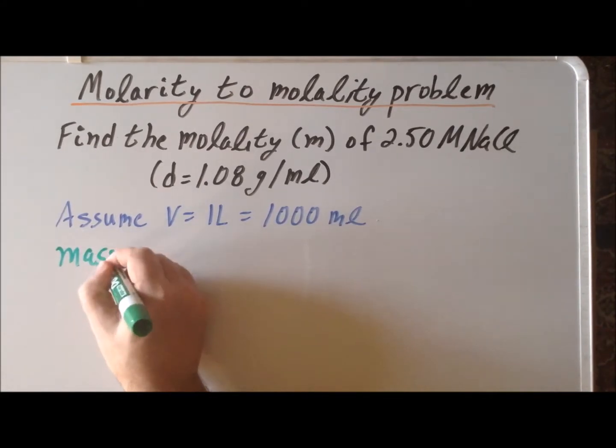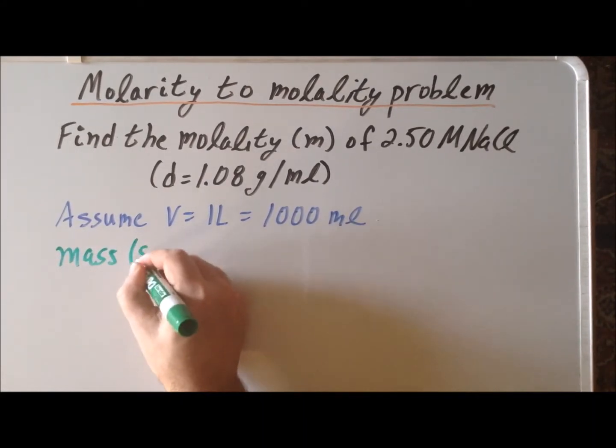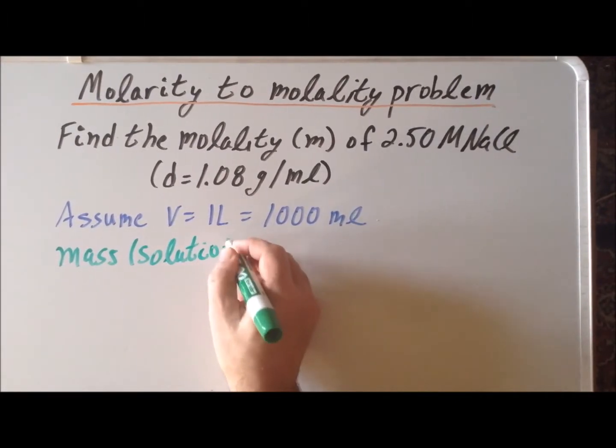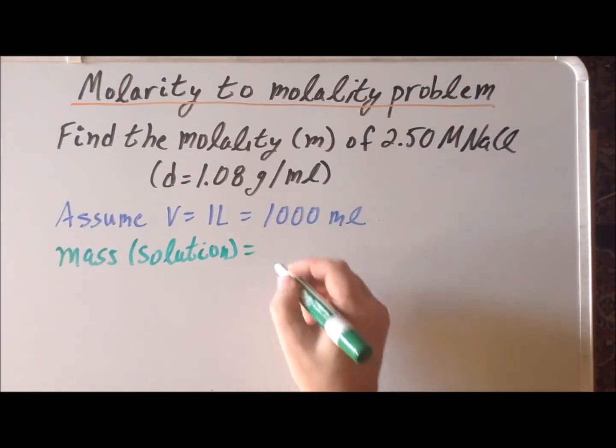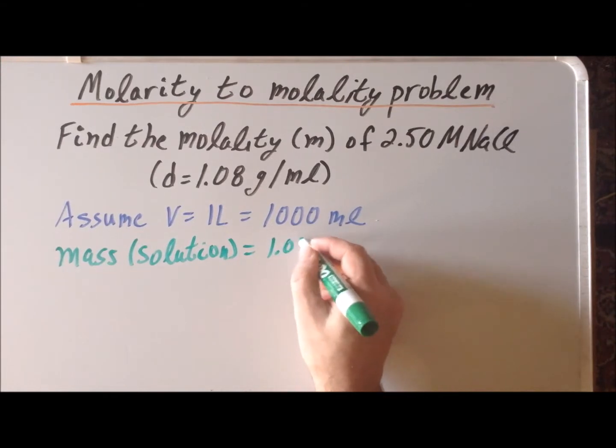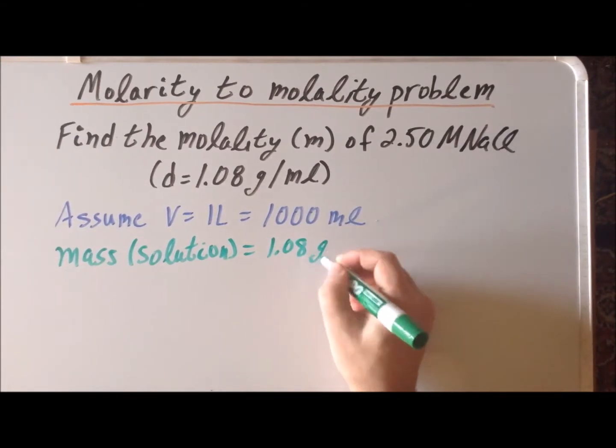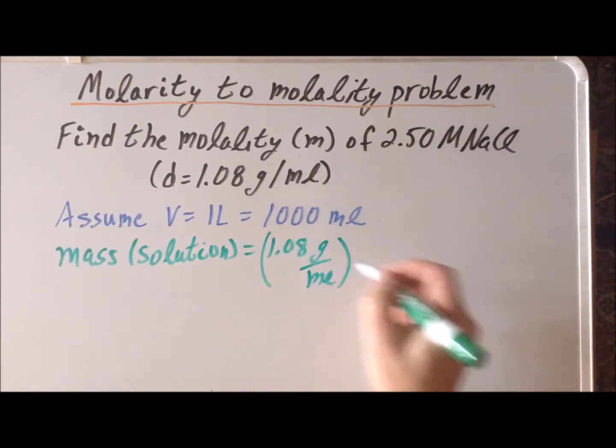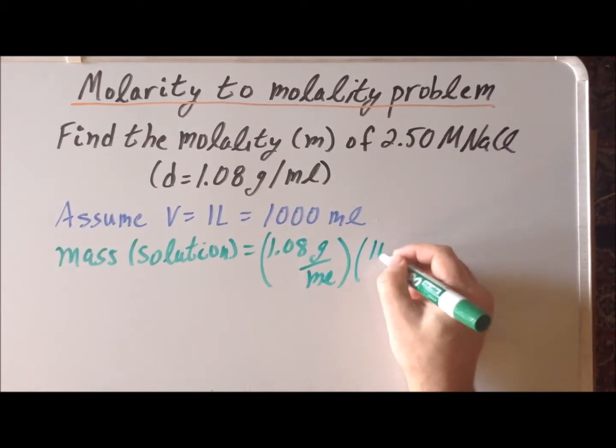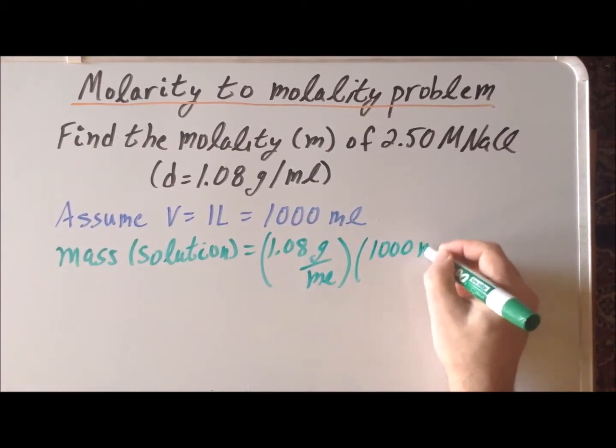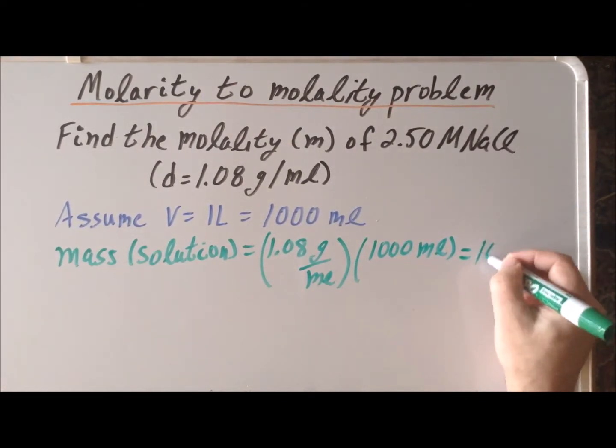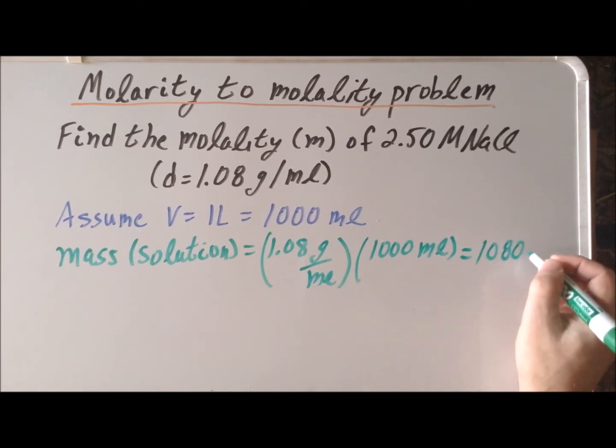So the mass of the solution is equal to the density, which is 1.08 grams per milliliter, times the volume, which is 1,000 milliliters. And this gives us that the total mass of the solution is going to be 1,080 grams.